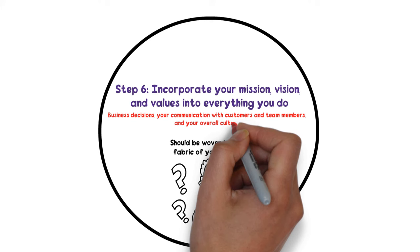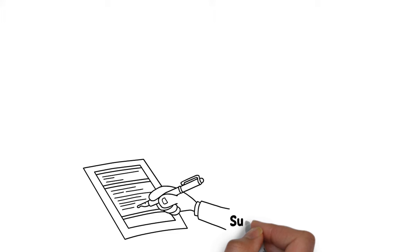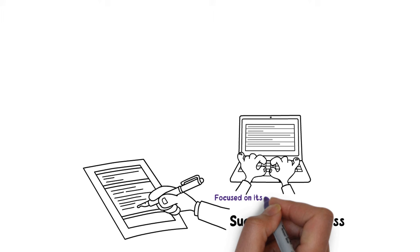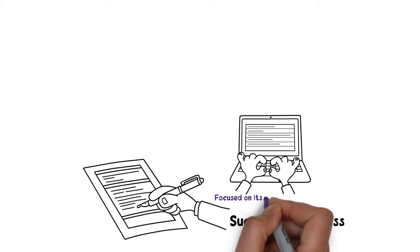Outlining your mission, vision, and values is an essential step in building a successful business. By creating a clear and concise statement, you can ensure that your business is focused on its purpose, its long-term goals, and guiding principles. Remember to share your statement with your team and incorporate it into everything you do.